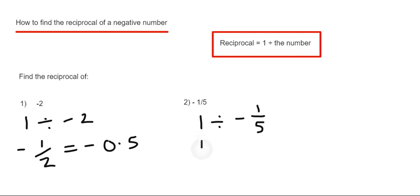So if we keep the first number the same, change the divide to a times, and we flip the second fraction over.